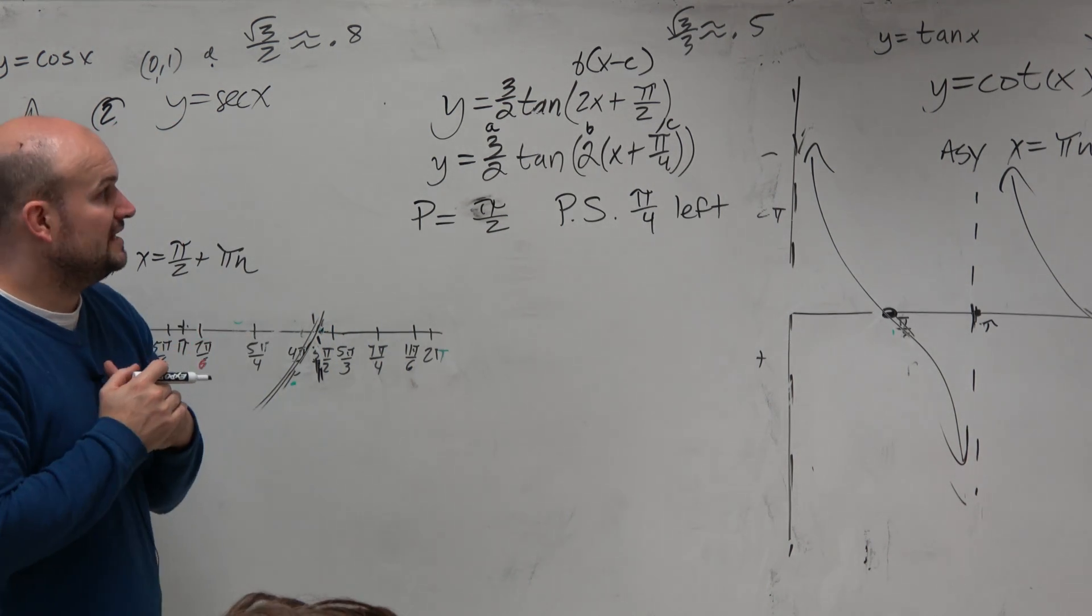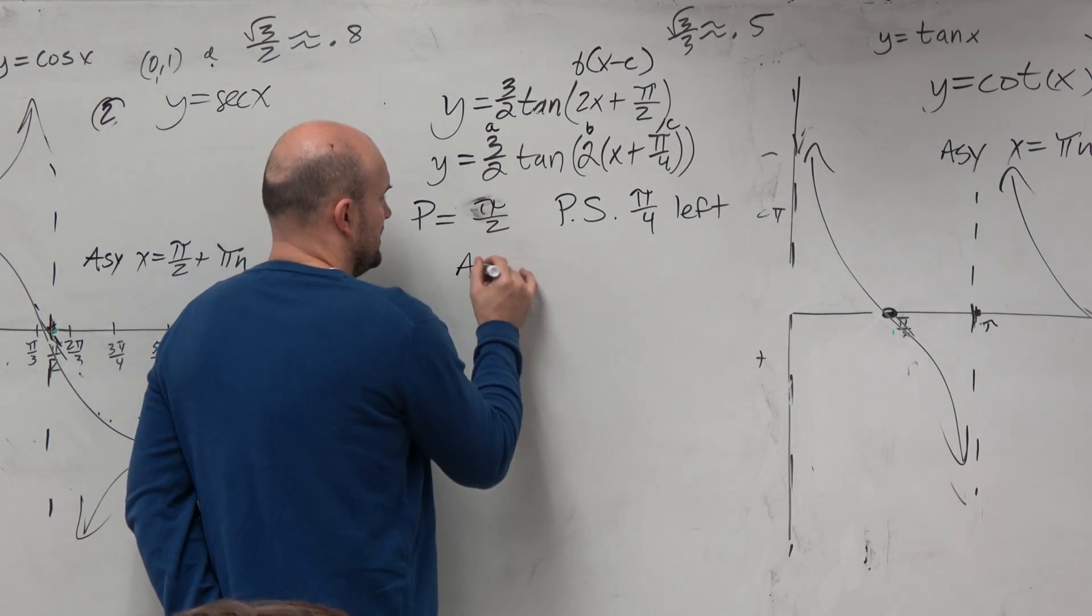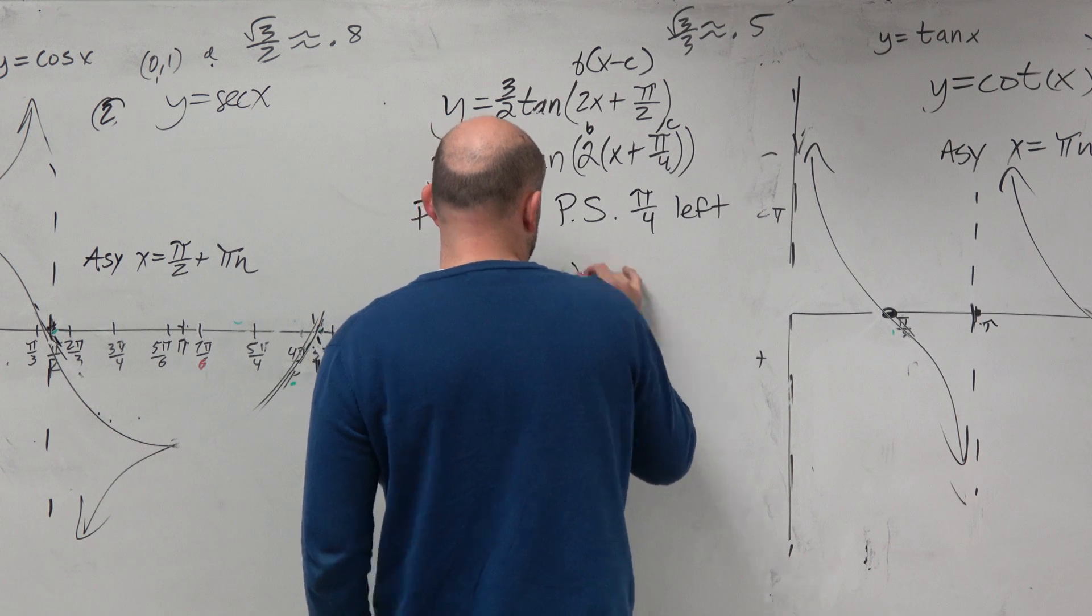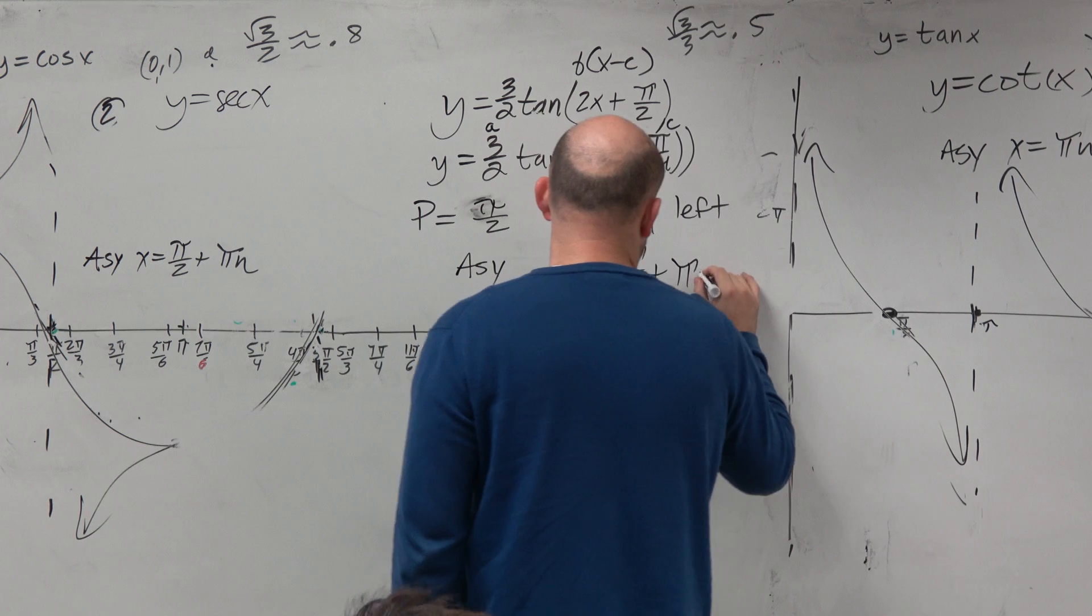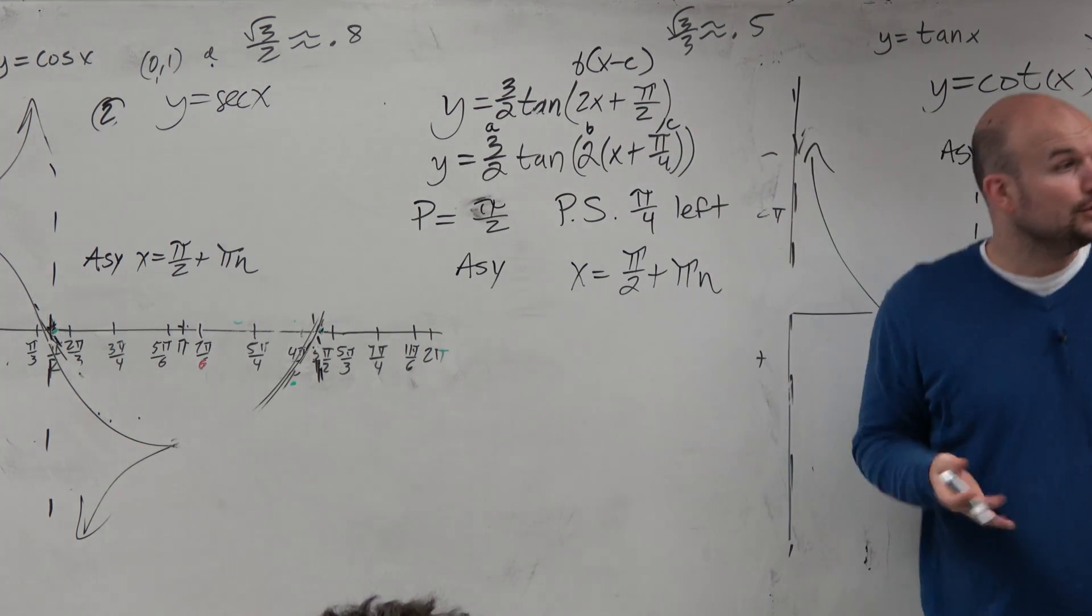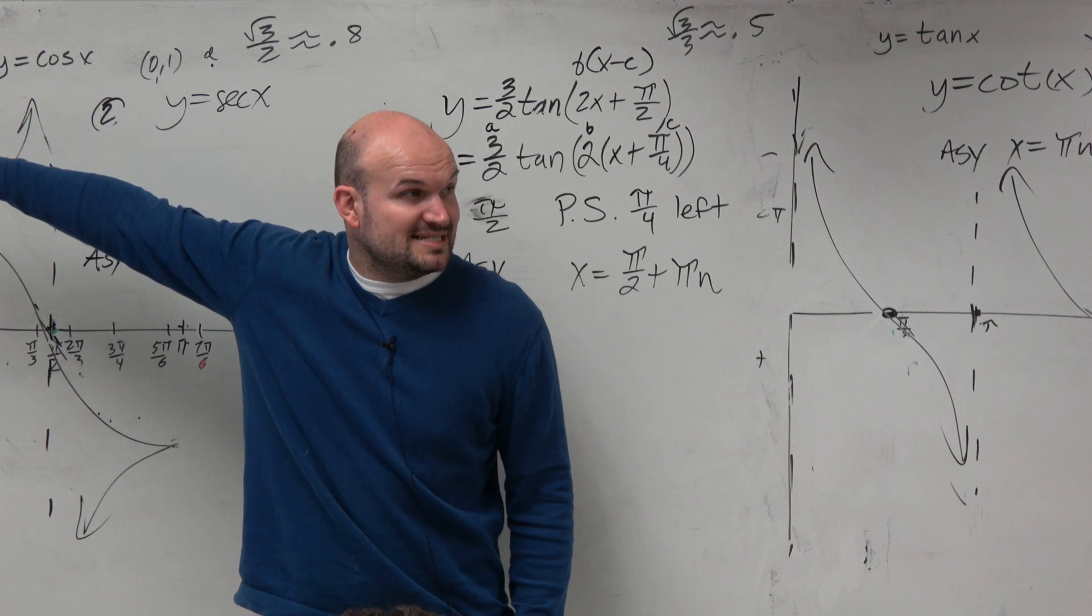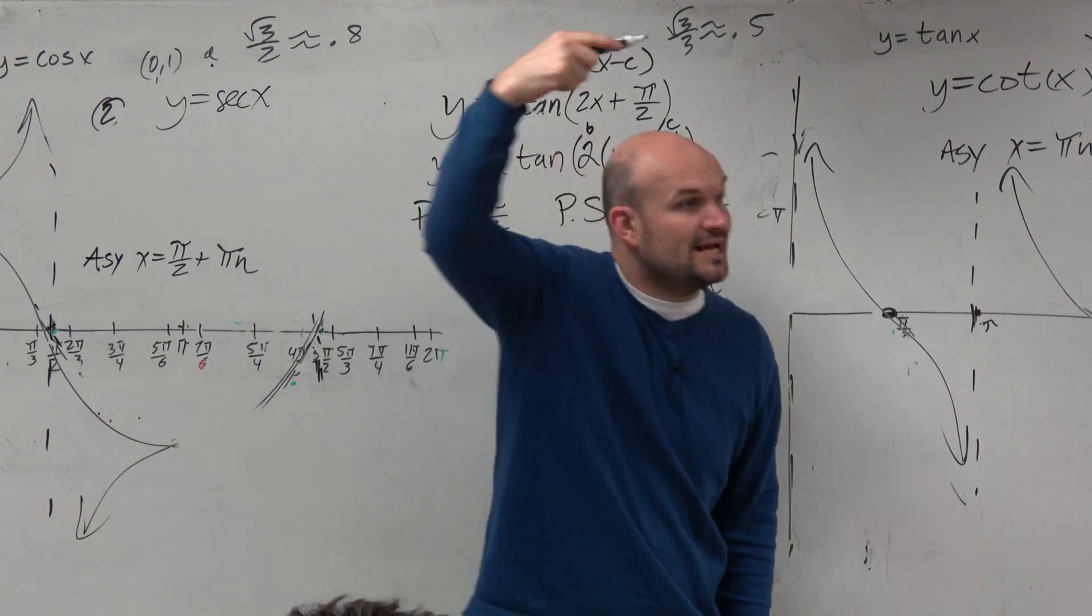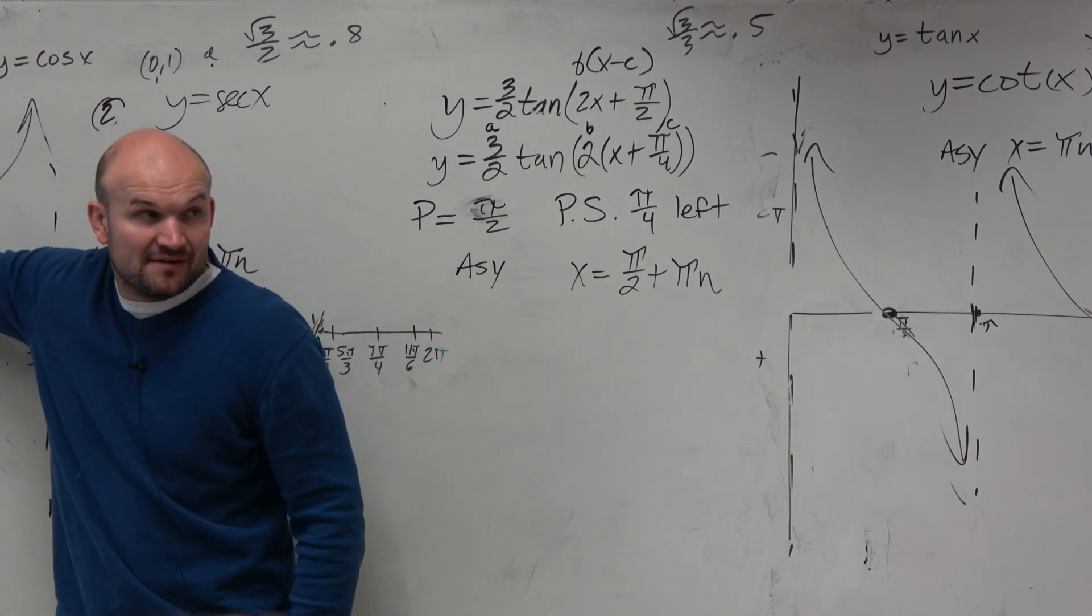Now let's figure out the asymptotes, because the range is negative infinity to infinity. So if you guys remember from your notes, the asymptote of tangent of x is x equals pi halves plus pi n. You don't believe me? Go and look at the unit circle right here. When is tangent going to be undefined? When is y over x undefined?